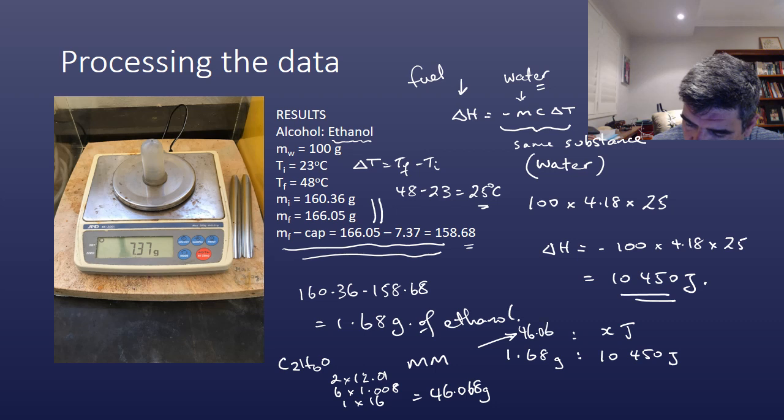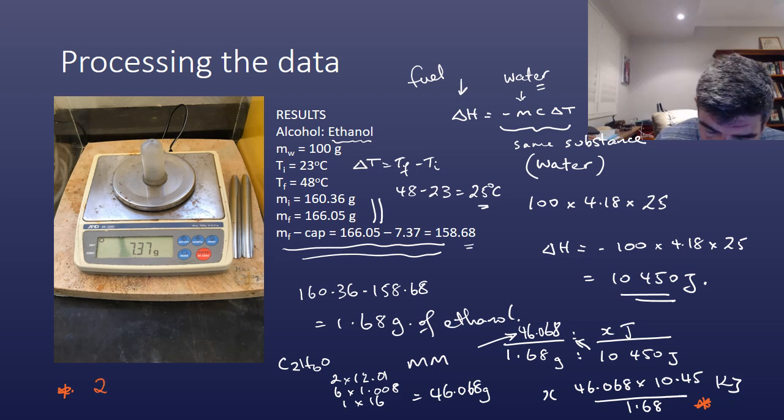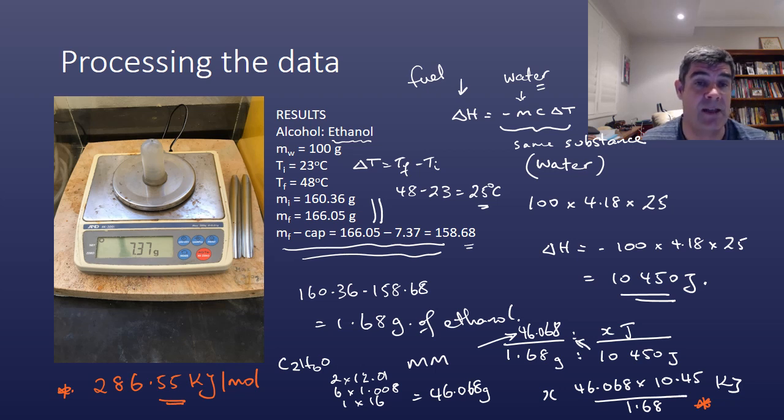So what I do then is I just have a straight ratio. If I multiply across to get rid of these, then 46.068 multiplied by, now I'm going to call this 10.45 kilojoules, divided by 1.68, gives me an overall value. I'm going to just pop a little orange colour down here, so you can see, gives me a value of 286.55 kilojoules per mole. So this is the molar heat of combustion, the experimental or empirical molar heat of combustion of this particular alcohol.